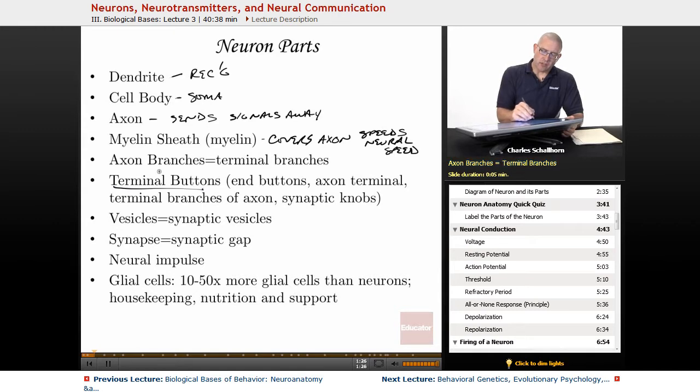There are these things called axon branches. Sometimes they're called terminal branches. There are terminal buttons, sometimes called end buttons, axon terminals, terminal branches of axons, synaptic knobs. As you read more into this, it's going to get easier to start putting all these words together in terms of dendrite, cell body, axon, axon terminal, et cetera.